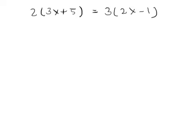Hi, let me explain how to solve this single linear equation. First of all, let us read this. It goes 2 times 3x plus 5 equals 3 times 2x minus 1.